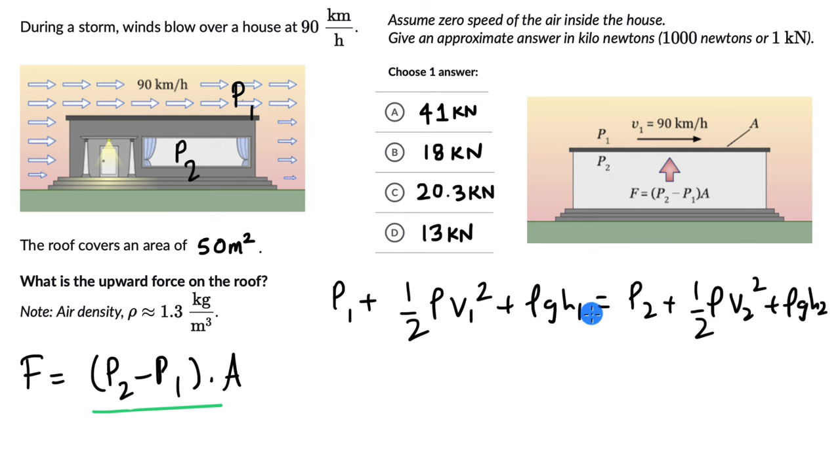We can assume H₁ equals H₂ because we are just talking about the roof. Right below the roof you have H₂, right above the roof you have H₁. There is almost no height difference, so we can assume they are equal, which makes life simpler. We can cancel them right away.